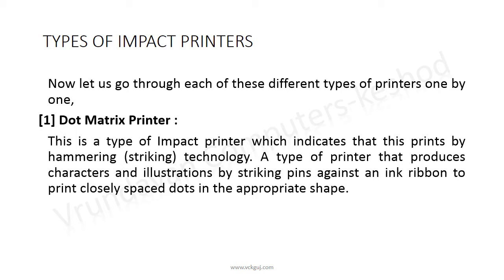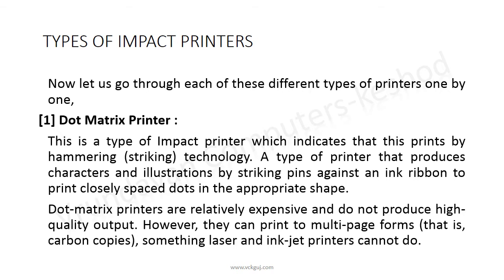The dots are arranged in the appropriate shape to form characters. Dot matrix printers are relatively inexpensive but do not produce high quality output. However, they can print to multiple part forms — that is, carbon copies — something laser and inkjet printers cannot do.